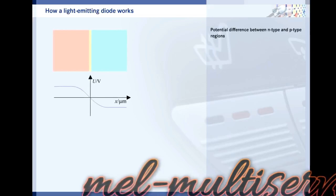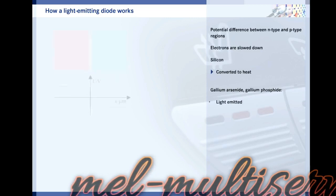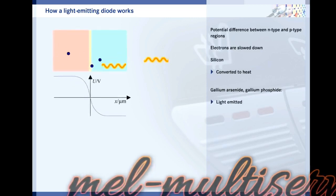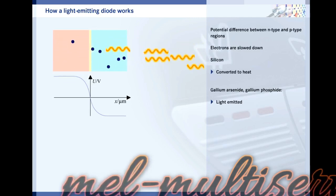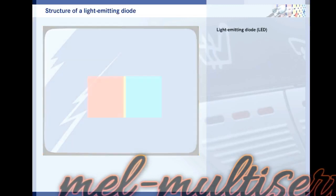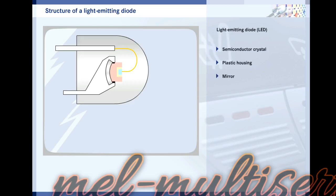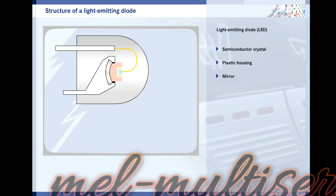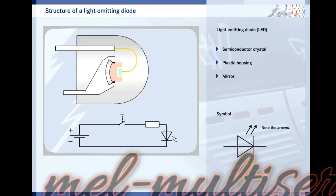There is a voltage difference between the n-type and p-type regions. Electrons which cross the depletion region and encounter this voltage difference are slowed down. In silicon diodes, the kinetic energy released is converted into heat. With special semiconductor materials such as gallium arsenide and gallium phosphide, the voltage difference is so great that light is emitted. This effect is put to use in light emitting diodes. The semiconductor crystal is fitted in a transparent plastic housing, and the holder for the semiconductor material has a reflective coating to improve light efficiency. When current flows under forward bias through the LED, the material in the P-N junction lights up.